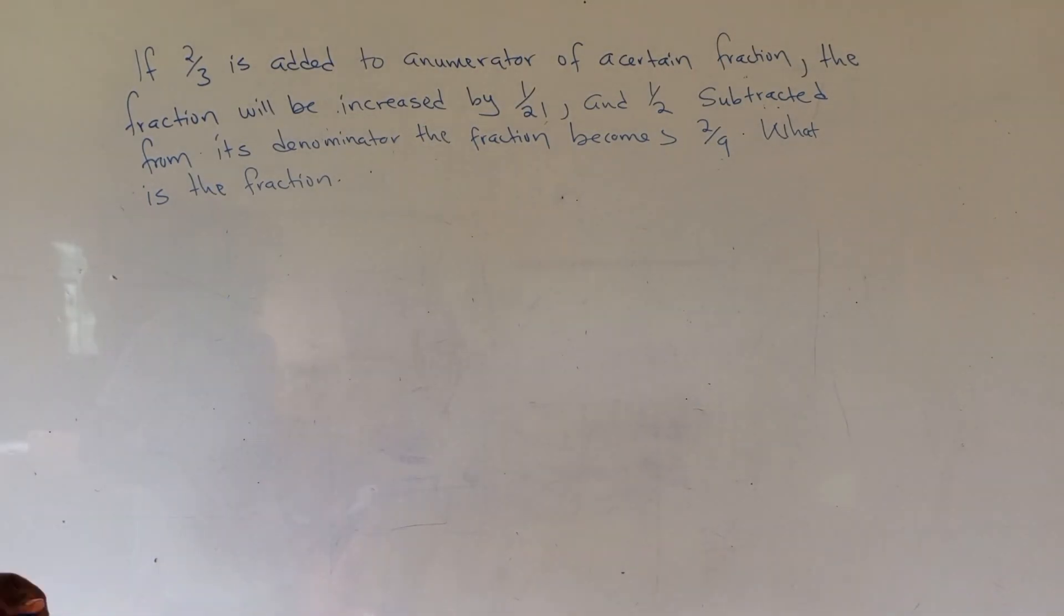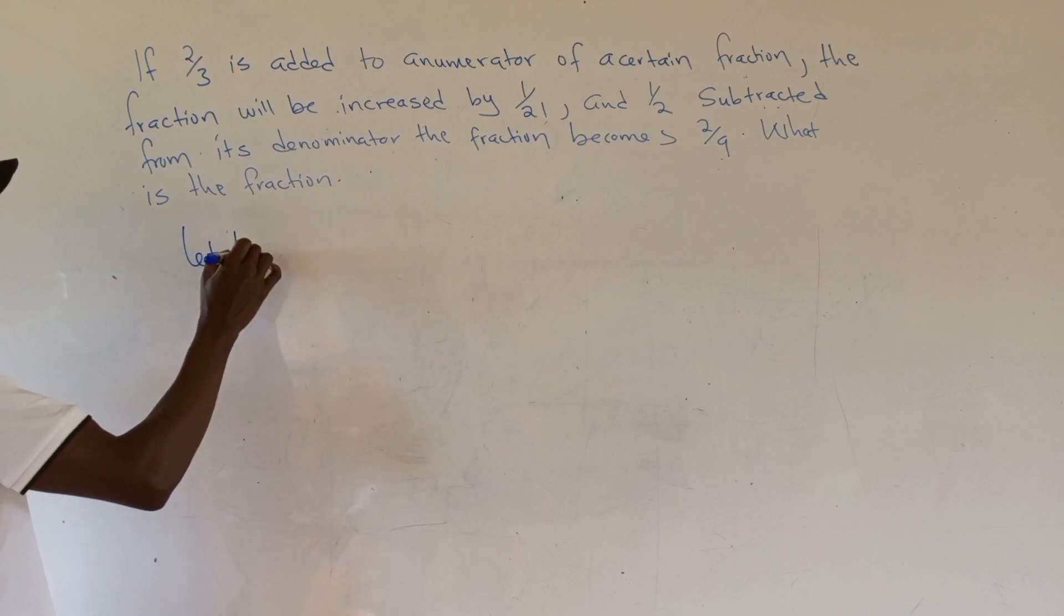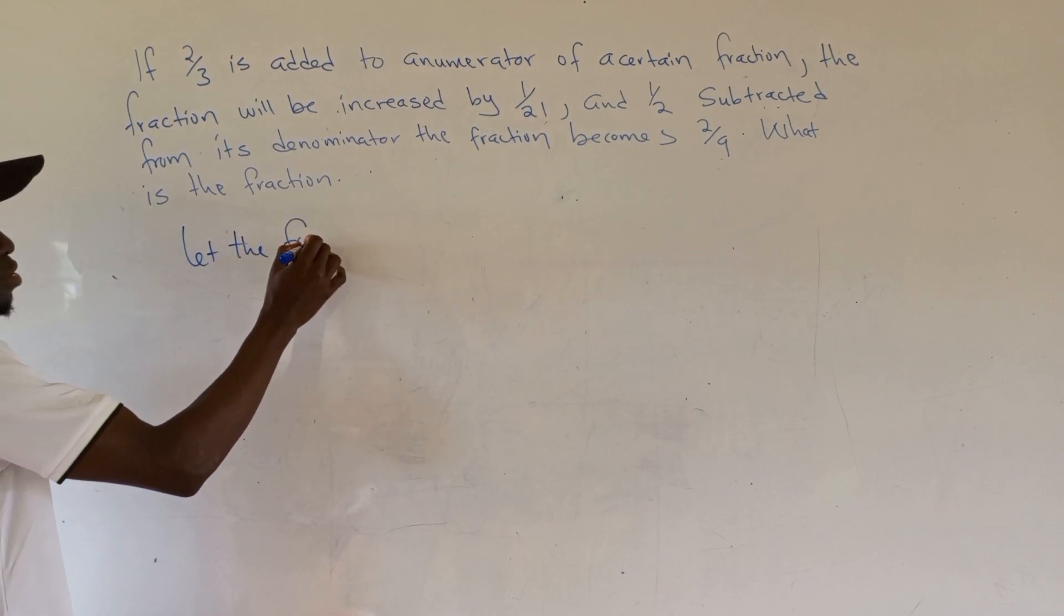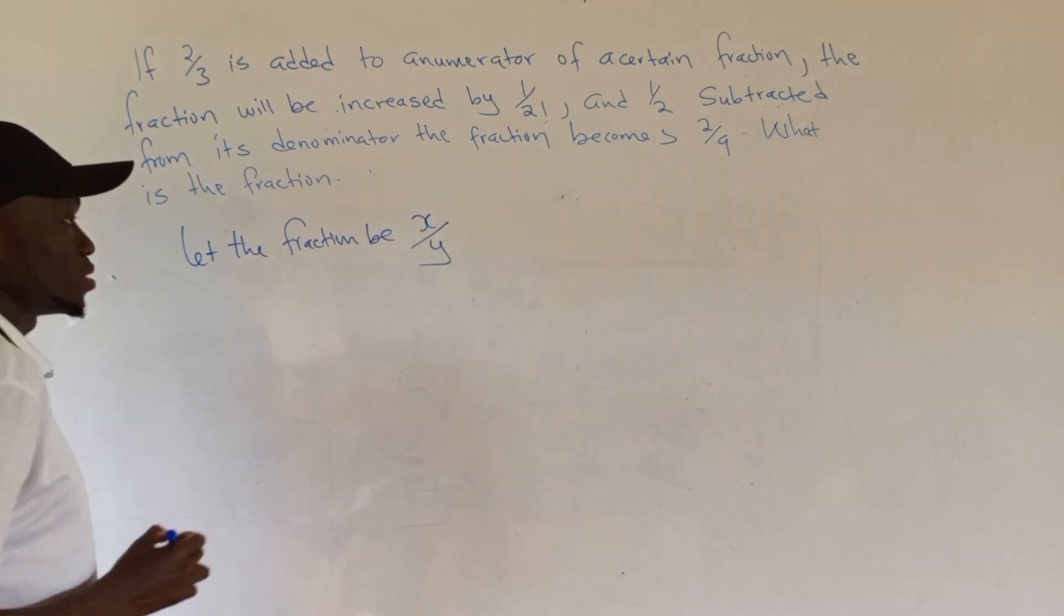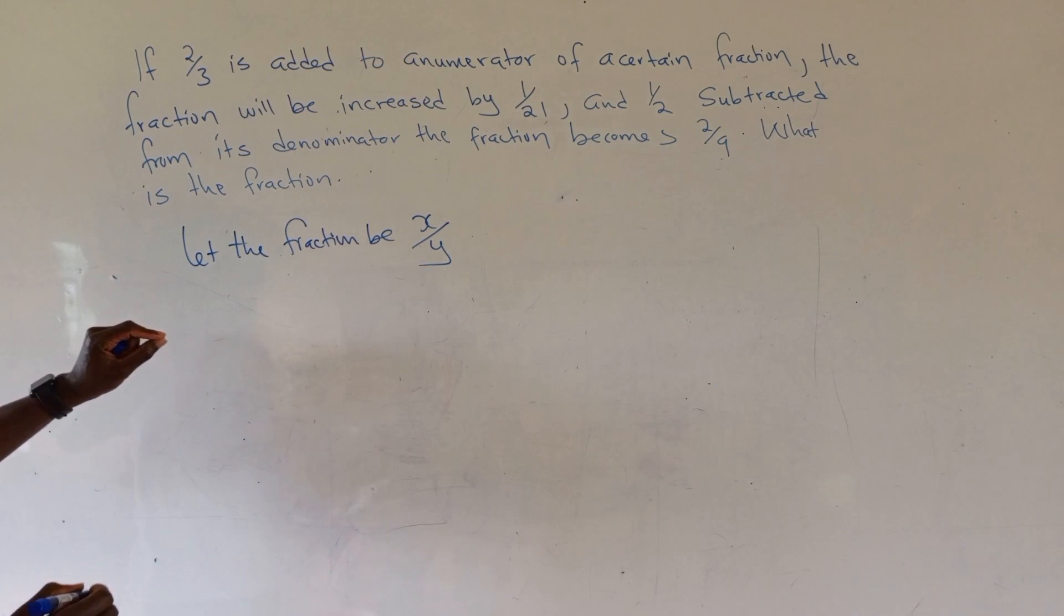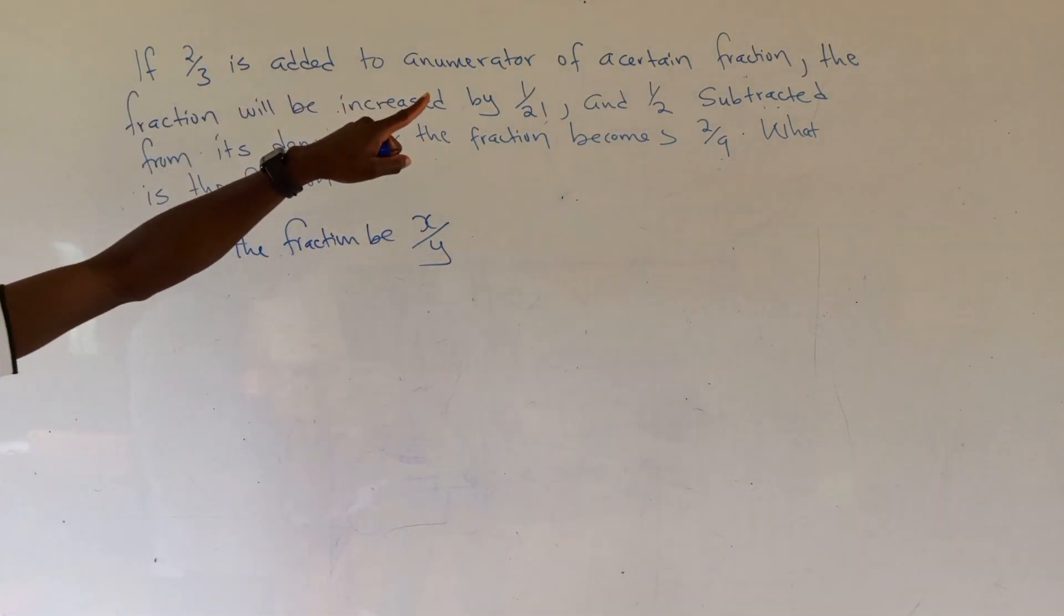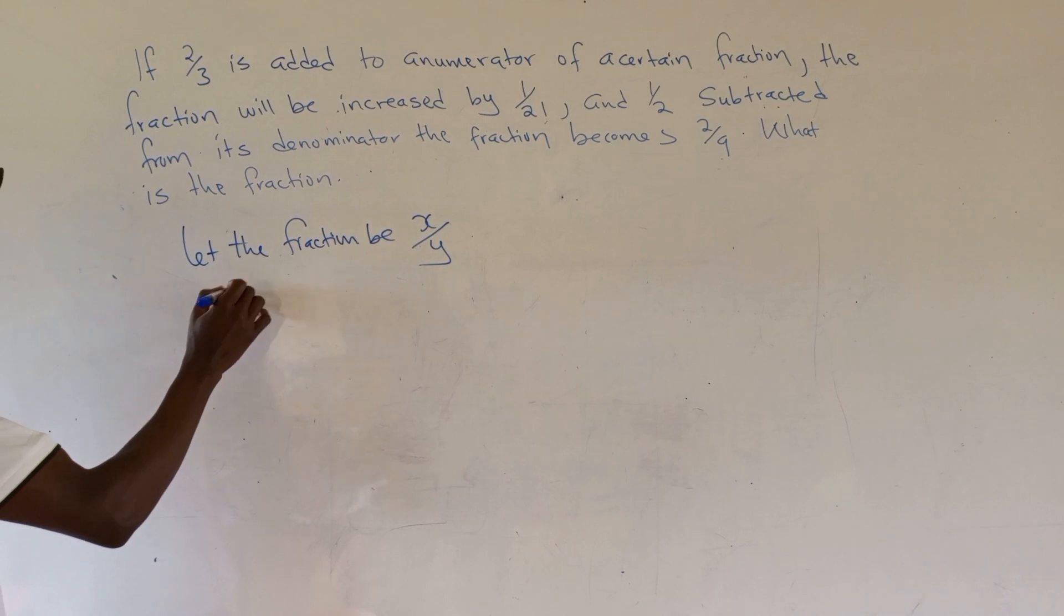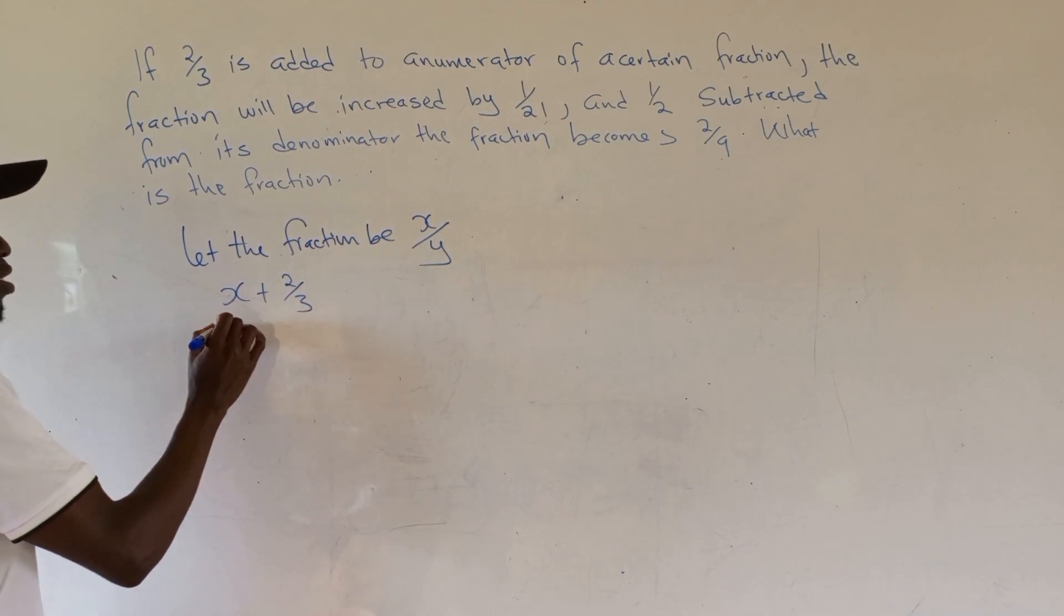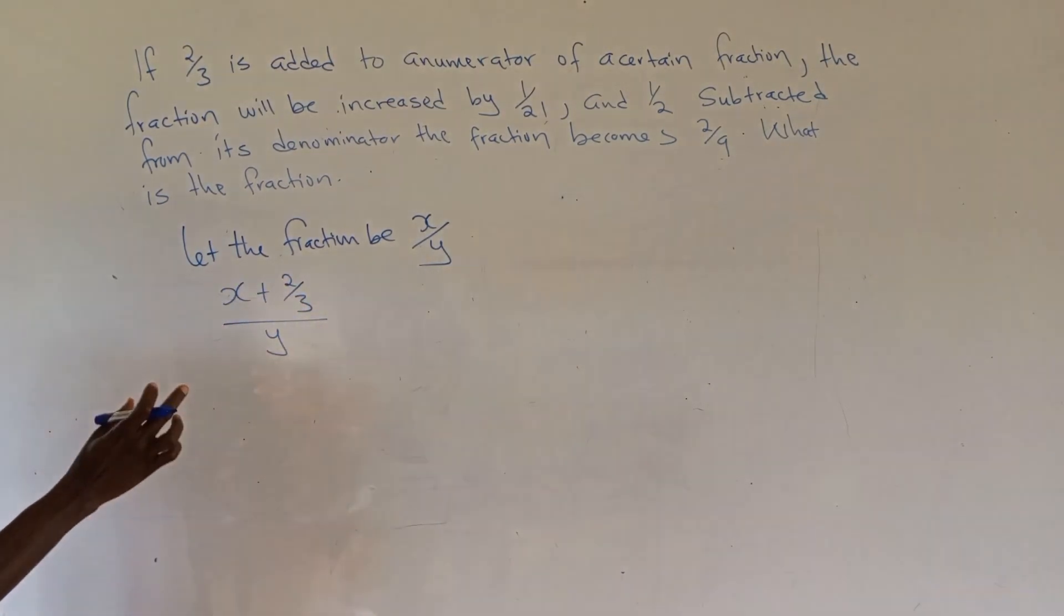Let the fraction be x/y. When you add 2/3 to the numerator, the fraction increases by 1/21. So (x + 2/3)/y represents adding 2/3 to the numerator.